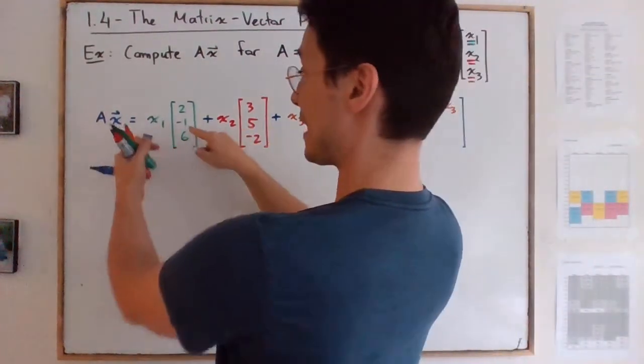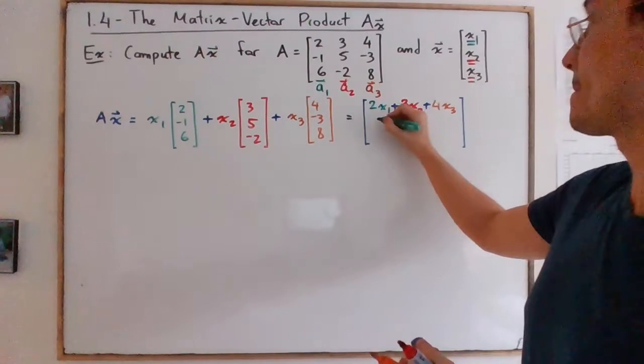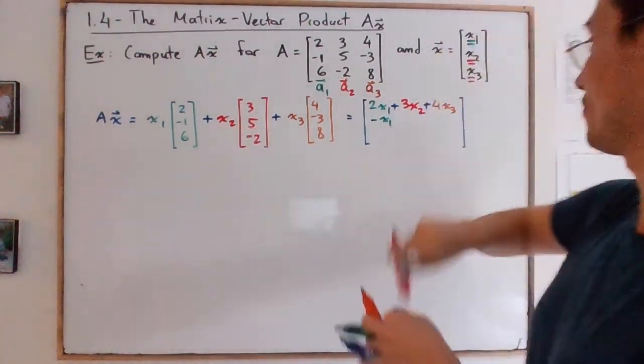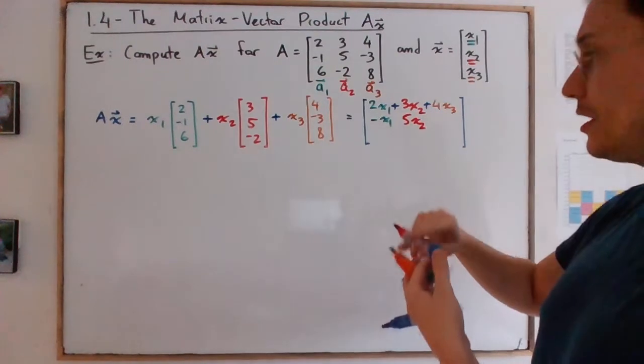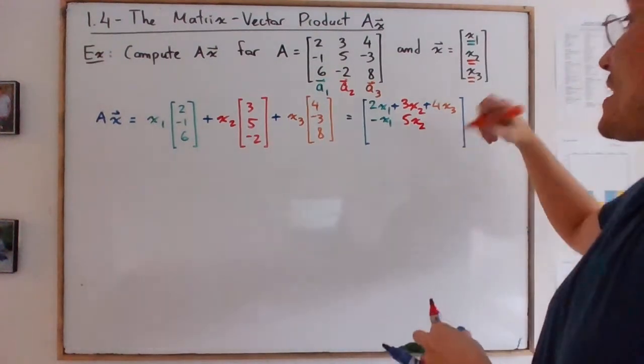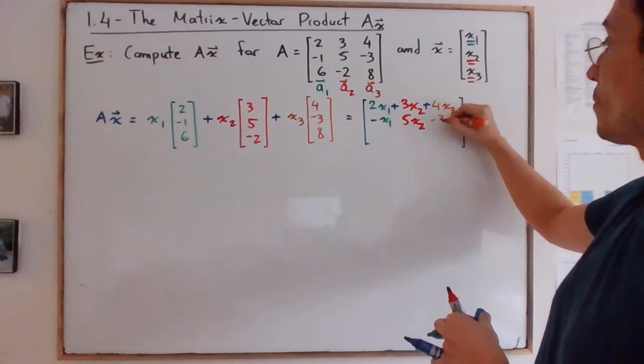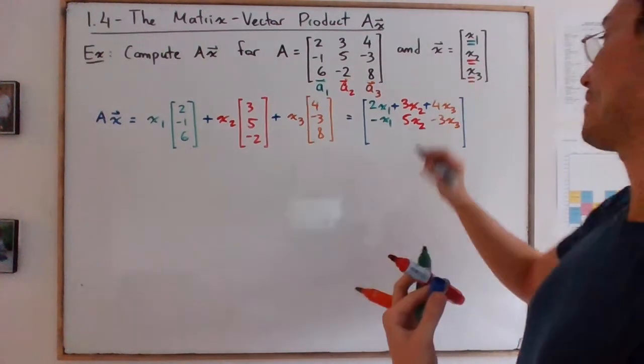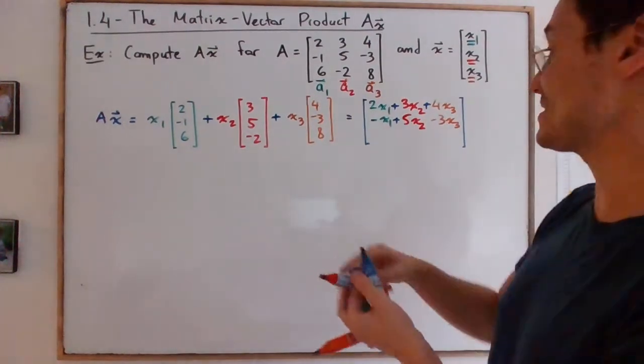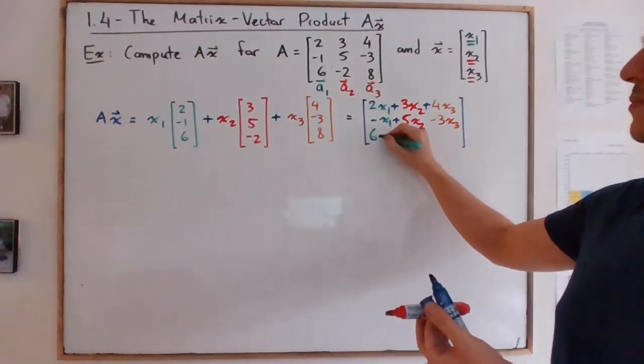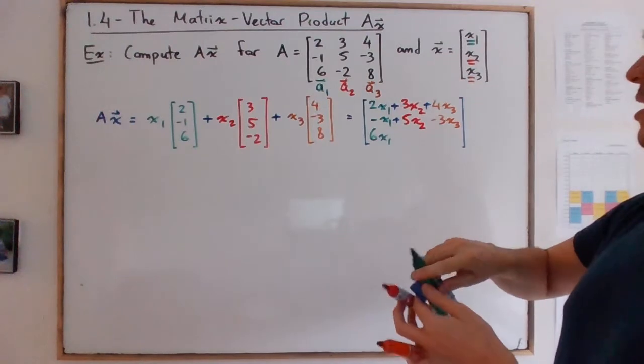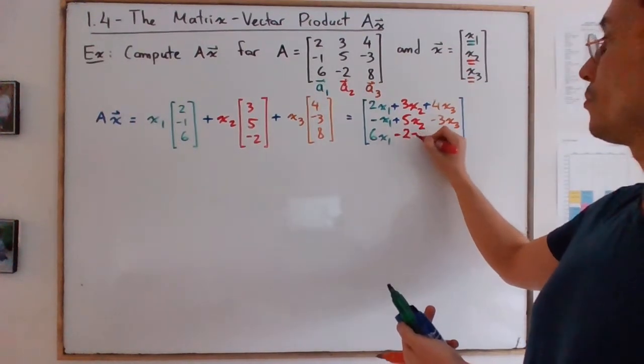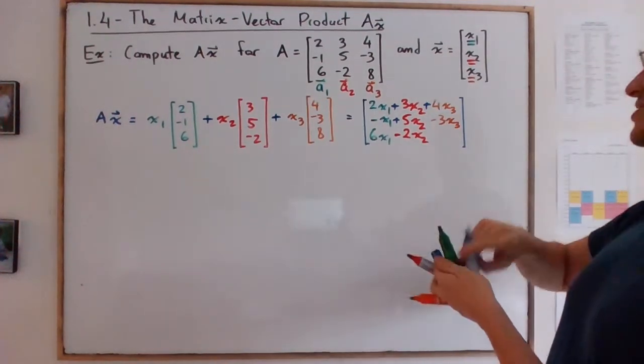I'm just going to put pluses in between. And then look at the second row, we're going to get -x1 plus 5x2 and -3x3. And again we have a plus in between here. Finally, we have 6x1 minus 2x2 plus 8x3.